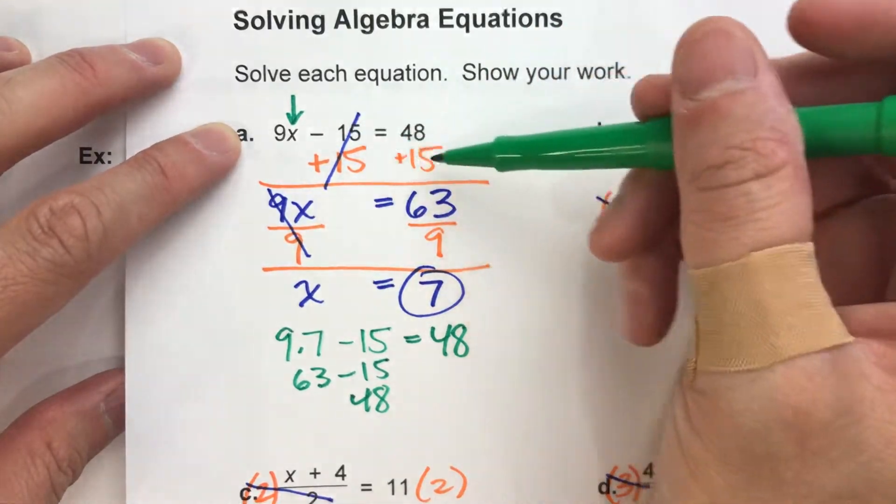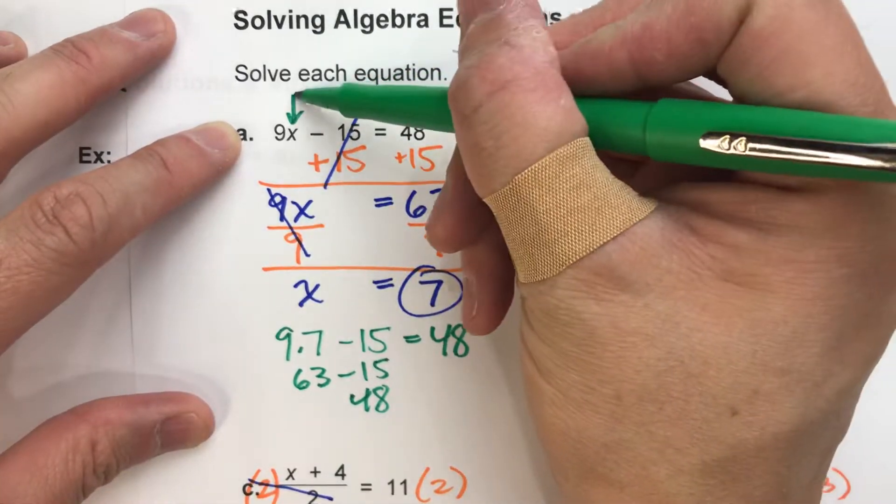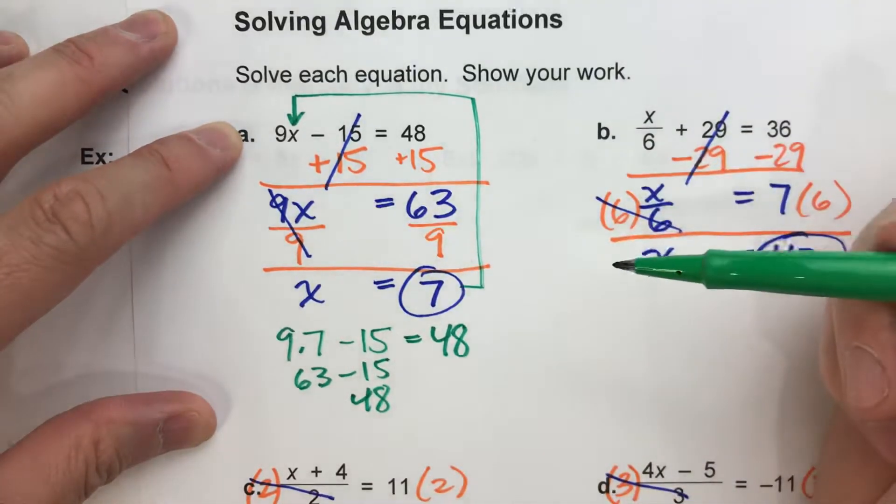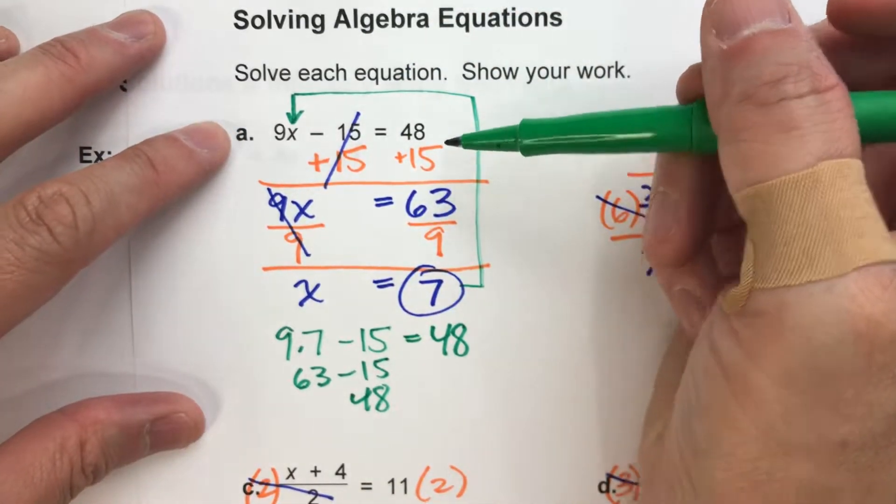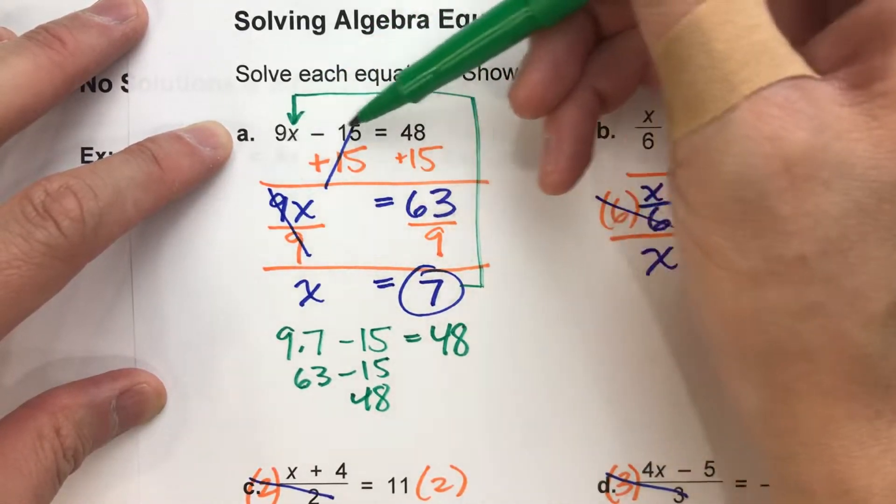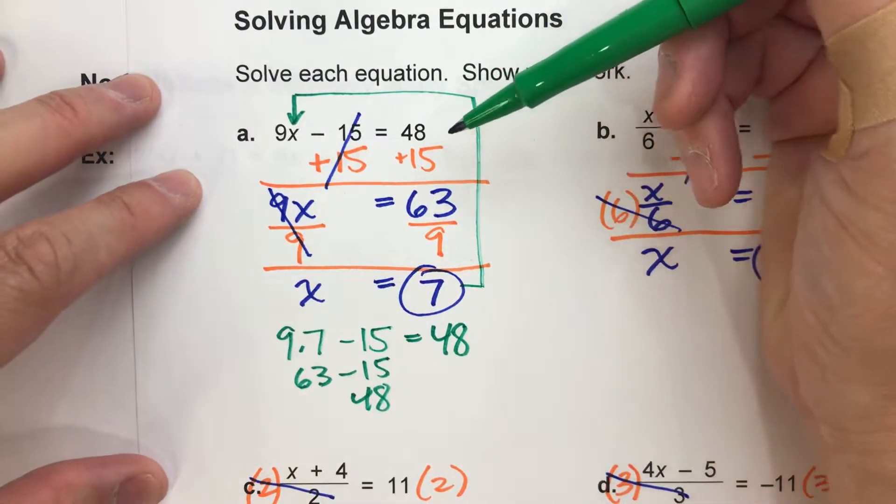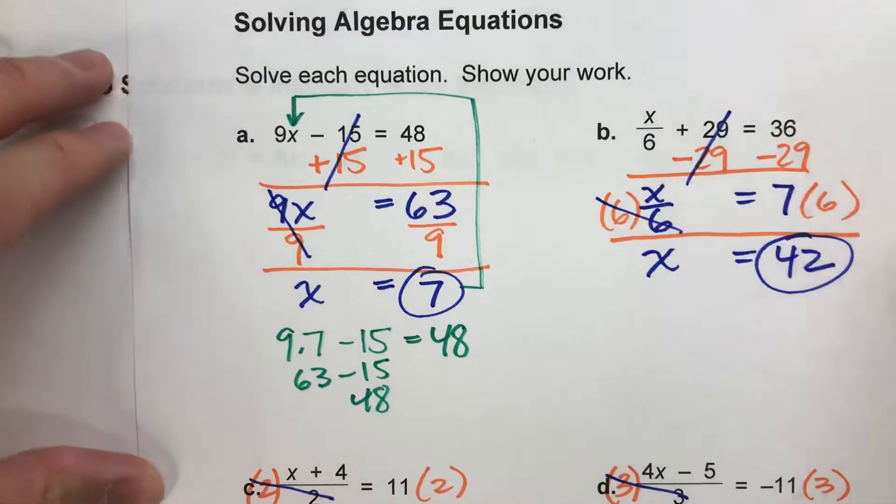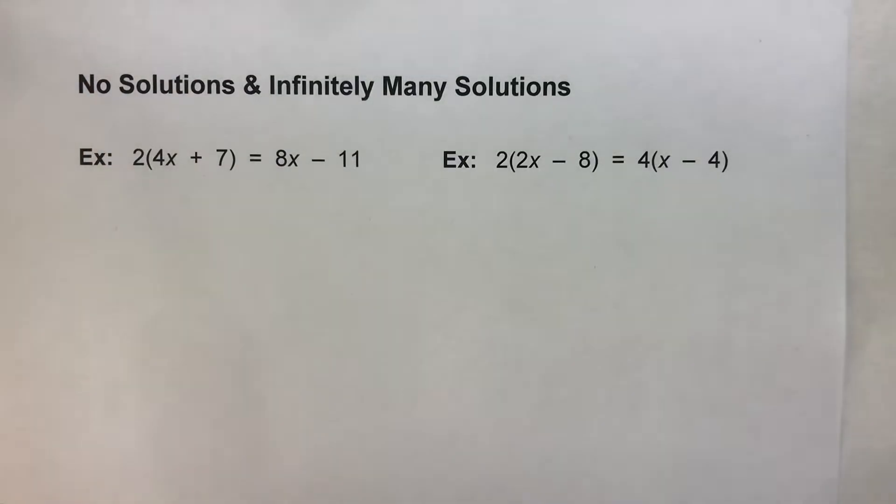And in this case, there's only one possible value of x that works for this equation. 7 is the only number we can put in for x here to make this side equal 48. However, that's not the case with all algebra equations, and that's what we're going to look at today.